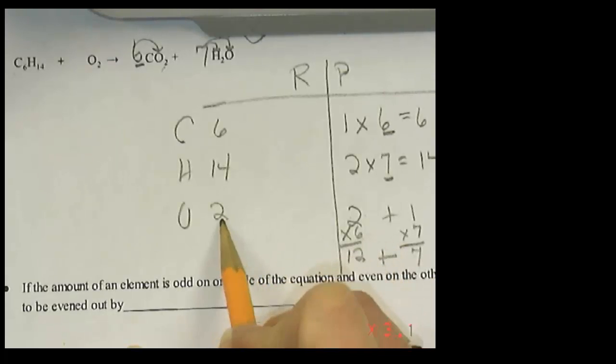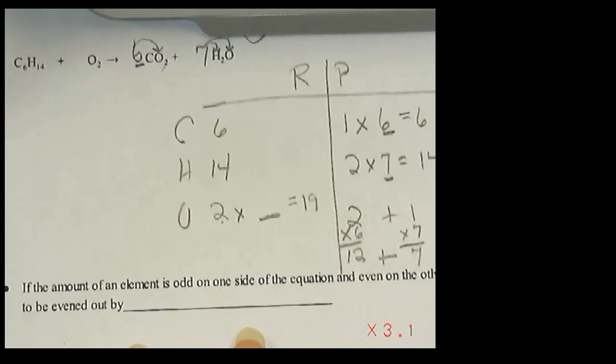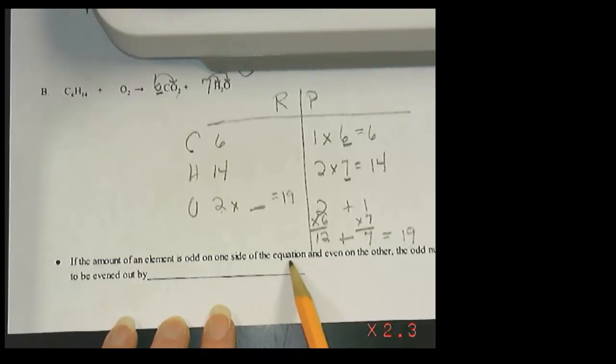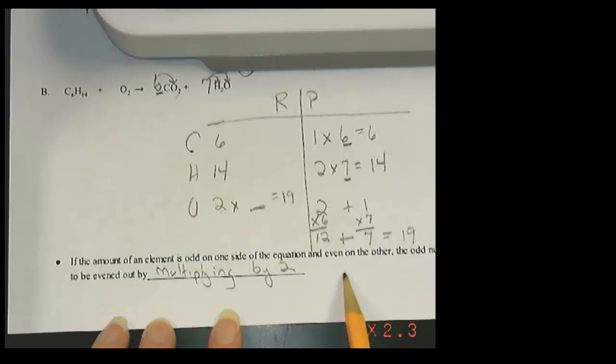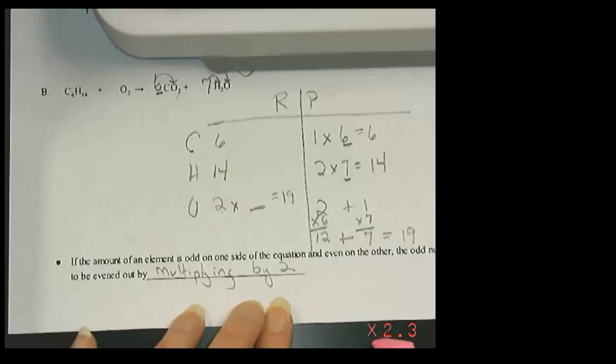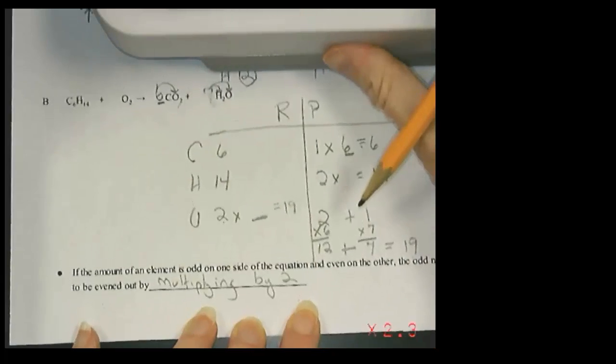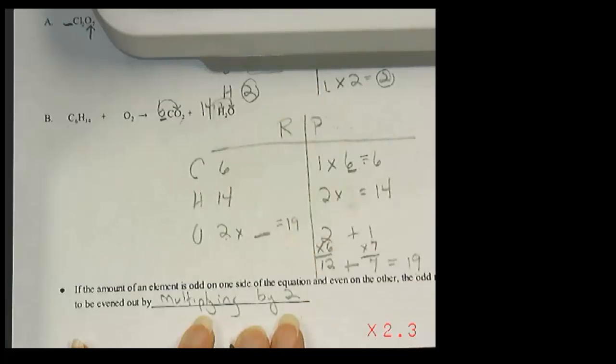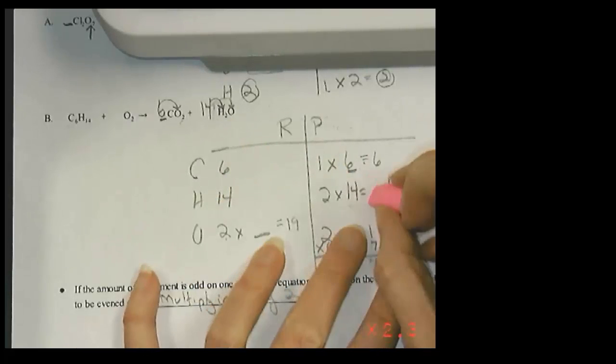So now I have to balance oxygen. So what you'll notice here is there's a two. There's no number that's a whole number that I can take times two to get 19. So this comes to a rule called the odd even rule. So if the amount of an element is odd on one side of the equation and even on the other, the odd number will need to be evened out by multiplying by two. That's the only thing I'm allowed to do with balancing equations is multiplying. So here's where my eraser's coming out. It's not that we did anything wrong. It's just the way this one works out. So seven is where my odd number is. So that's the one that's going to need to be erased. So I'm going to get rid of this seven. And since that's my odd number, I need to make seven 14. Now, this is ugly. It has a ripple effect through that formula. So I'm going to change my multiplier to 14, which is going to make this number 28.